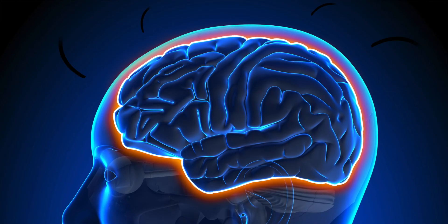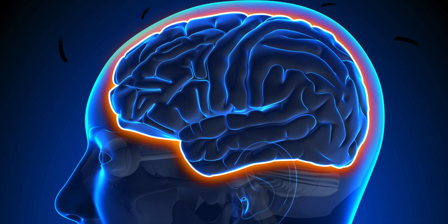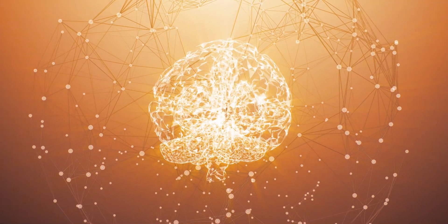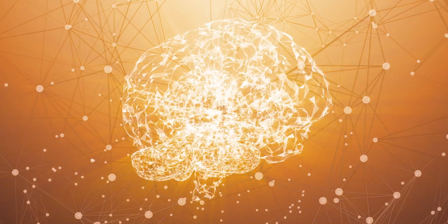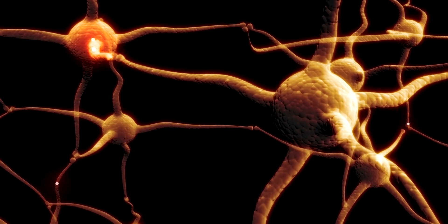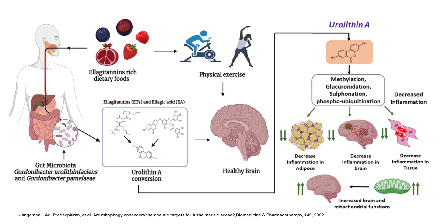Third, the brain. Urolithin A is one of those few compounds that has been shown to cross the blood-brain barrier, meaning it can enter the brain space. Many other antioxidant chemicals cannot cross the blood-brain barrier and are therefore useless inside the brain. Trivia: another molecule that can traverse the blood-brain barrier is curcumin from turmeric, which has been shown to diminish neuroinflammation. There are many studies showing that urolithin A is neuroprotective and could potentially show benefit in neurodegenerative diseases like Alzheimer's. One early feature of Alzheimer's is mitochondrial dysfunction within the brain, and urolithin A's improvement of mitophagy positions it nicely for prevention of Alzheimer's and dementia.